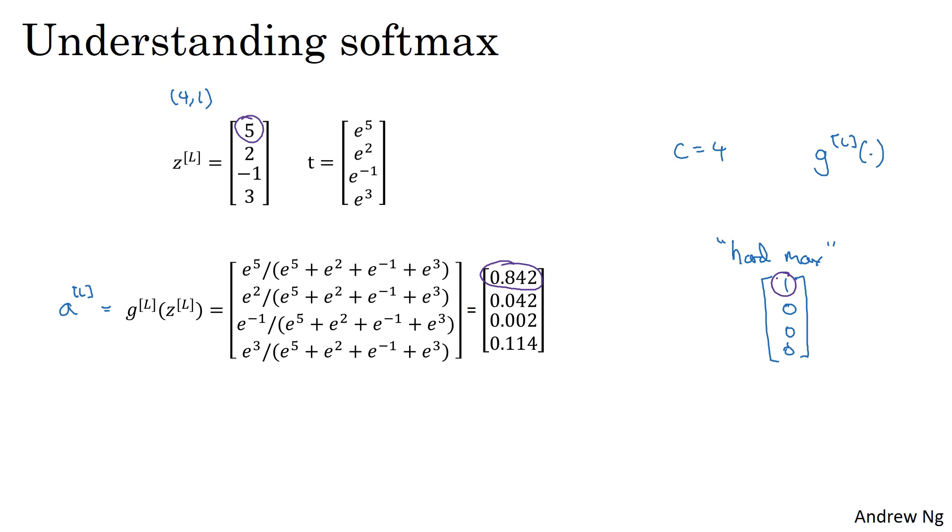Whereas in contrast, the softmax is a more gentle mapping from Z to these probabilities. So I'm not sure if this is a great name, but at least that was the intuition behind why we call it a softmax. It's in contrast to the hardmax.